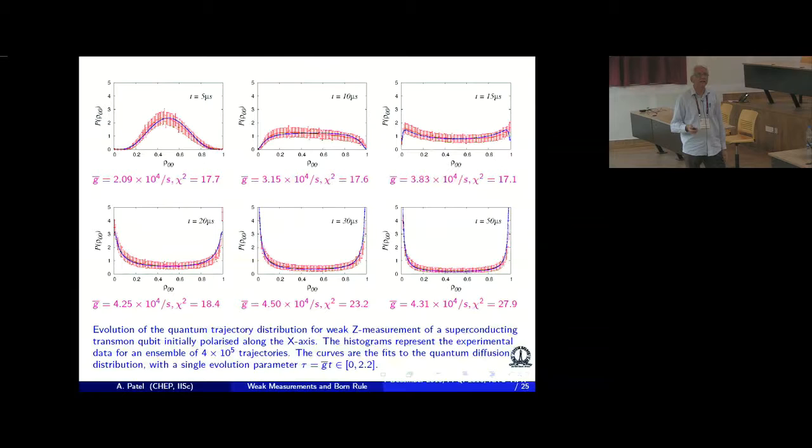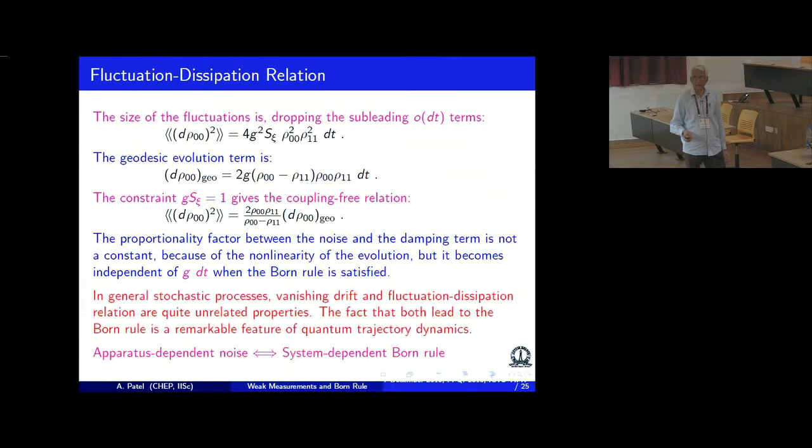So that basically gives a solution to the problem of what happens during the measurement. It's a dynamics of quantum diffusion. And the problem of Bond rule has been separated out into an apparatus-dependent noise. The important point is that the Bond rule answer depends on the system. The noise is independent of the system. And if you understand what this noise is coming from, it will probably give an understanding of what is our underlying theory. But what is certain is that to understand Bond rule, you do not need any fancy interaction other than this quantum diffusion process. And the fluctuation-dissipation relation relates d rho squared, which is the fluctuation in the geodesic movement towards the fixed point.